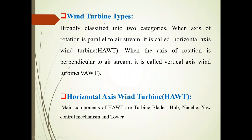Broadly, this wind turbine is classified into two categories according to the rotation of the axis. When the axis of rotation is parallel to the airstream, it is called horizontal axis wind turbine, HAWT. And when the axis of rotation is perpendicular to the airstream, then it is called vertical axis wind turbine, VAWT. Now we will discuss first the horizontal axis wind turbine, HAWT.